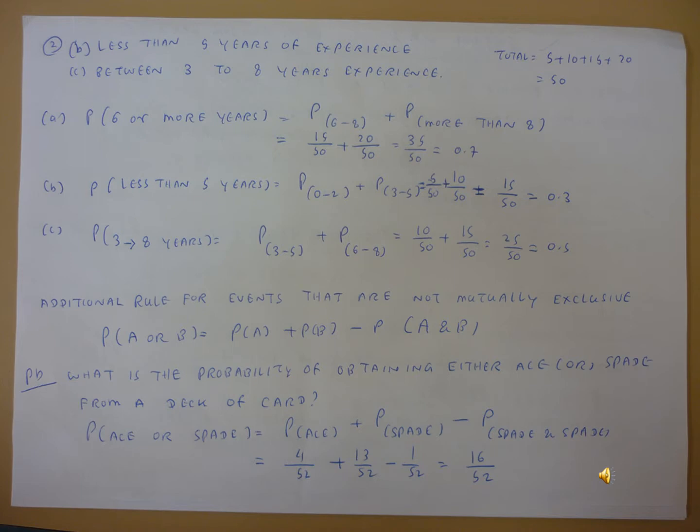We can also write down the addition rule for events that are not mutually exclusive. This means that the outcomes of A and the outcomes of B are not related. In this case, P(A or B) equals P(A) plus P(B) minus P(A and B).